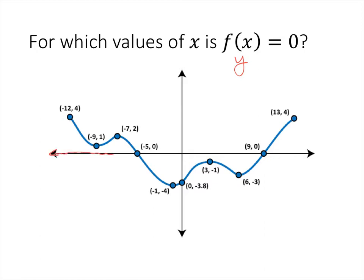Y equals 0 is the x-axis, so we're looking for places where my graph crosses the x-axis. And we see that that happens twice at x equals negative 5 and at x equals 9. So the answer to this question would be that x equals negative 5 or x equals 9. We get two solutions.